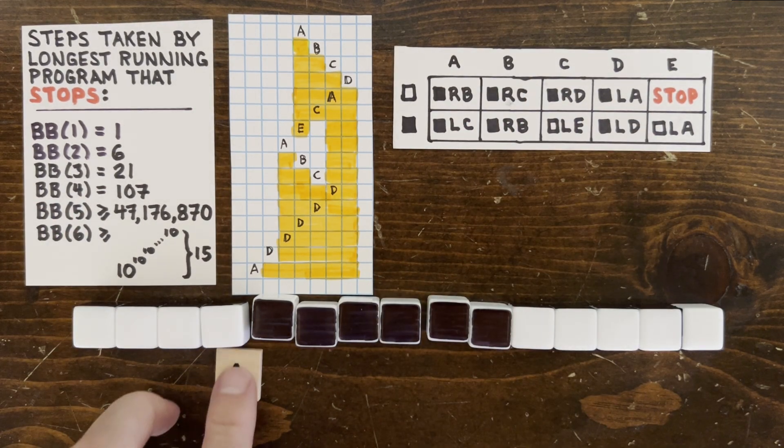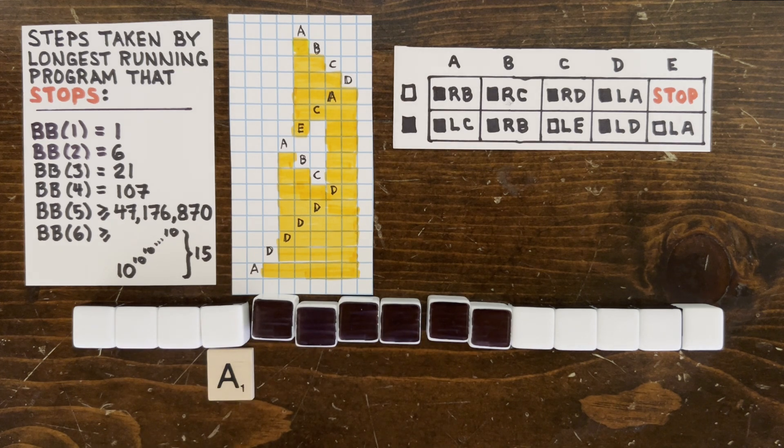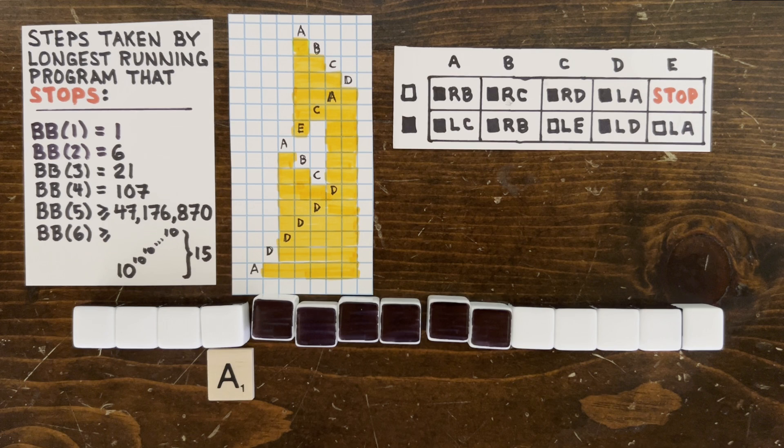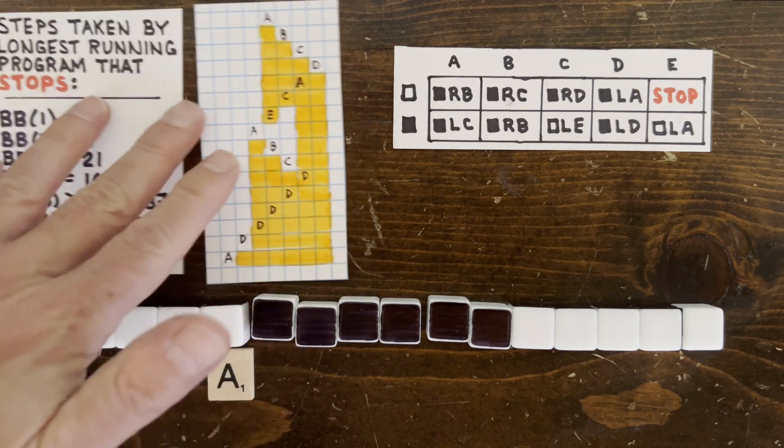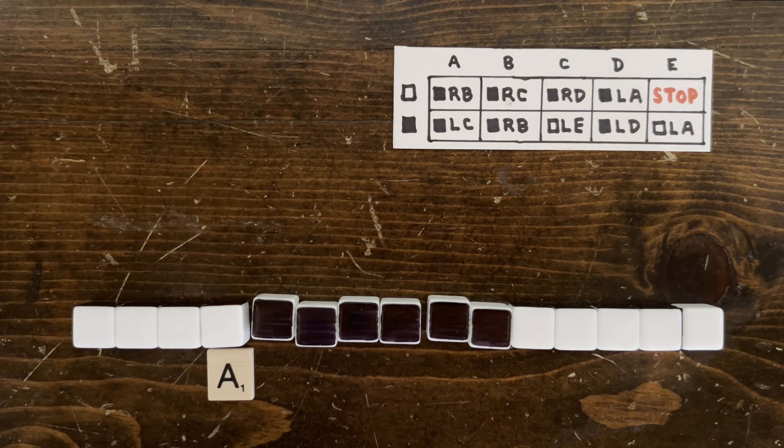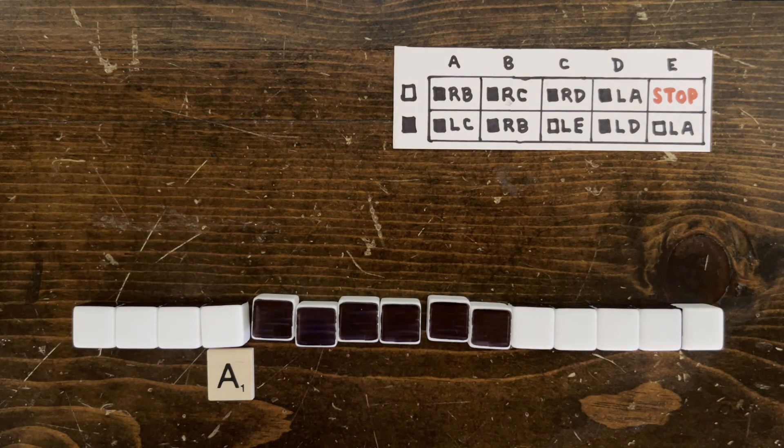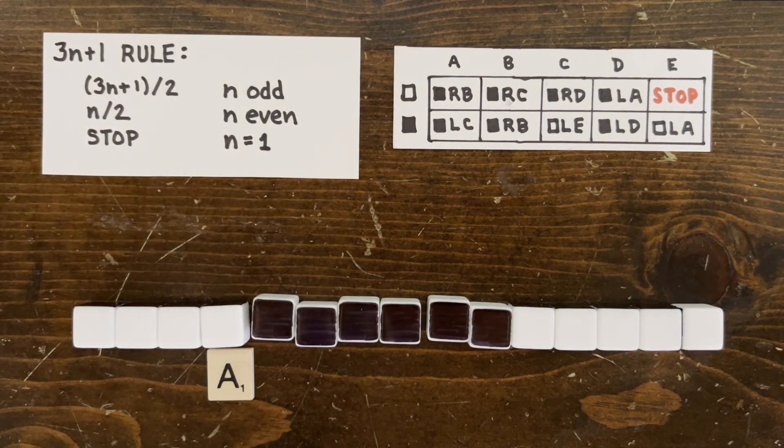So what the heck does this program do besides run for 47 million steps? Well, when a person writes a program, they can tell you what it does, but nobody wrote this program. Somebody just discovered it. Now, it turns out somebody else analyzed it and found that it computes the 3n plus 1 rule.